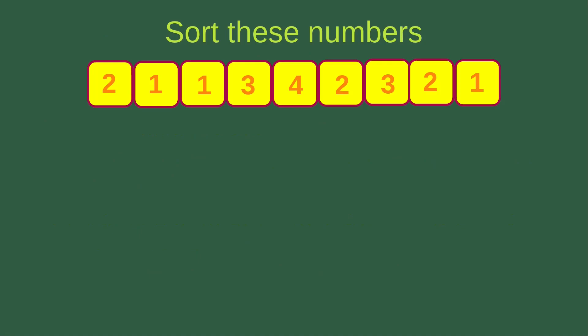Suppose we have these numbers to be sorted. You can expect that the three ones will be put in front of the three twos, followed by two threes and one four.